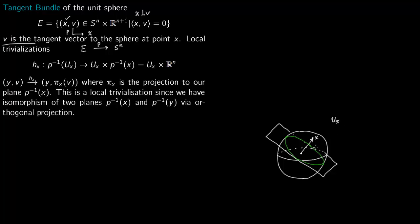The preimage P^{-1}(U(X)) takes us back into the total space E. You take points Y and V, where Y lies on the sphere and V is a tangent vector there. The local trivialization condition says P^{-1}(U(X)) maps to U(X) times P^{-1}(X). Associated to every point X you have this plane P^{-1}(X).